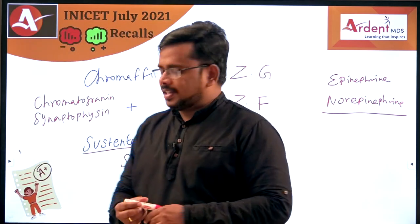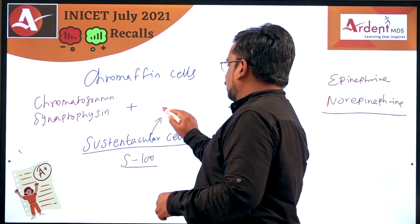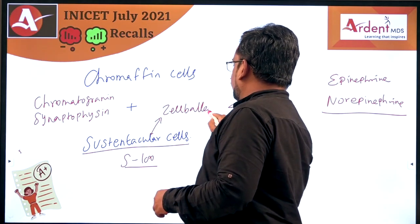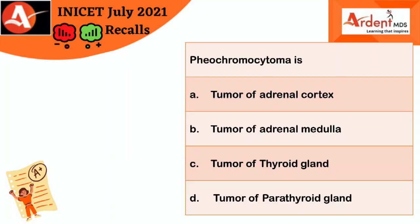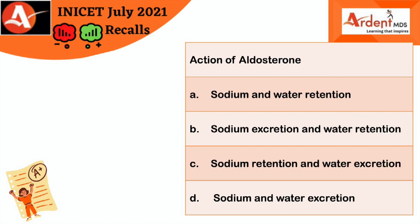Sustentacular cells are sometimes otherwise called chief cells. Pheochromocytoma is called the 10% tumor because 10% is bilateral, 10% is extra-adrenal, 10% is in children, 10% is associated with malignancy, and 10% of patients are non-hypertensive. Now, coming to one more related question on the topic: the action of aldosterone.